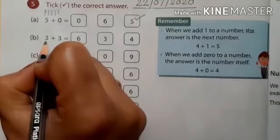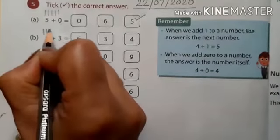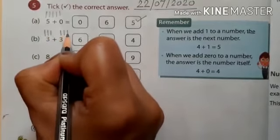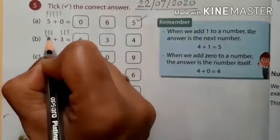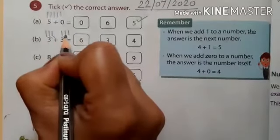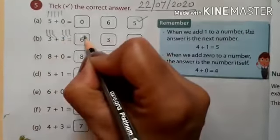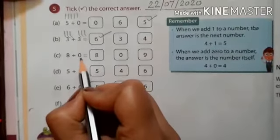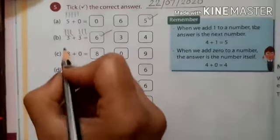The first number is 3, so draw three lines: 1, 2, 3. Next number is 3: 1, 2, 3. Total lines are 1, 2, 3, 4, 5, 6. It means the answer is 6. Next sum: 8 plus 0. The first number is 8.